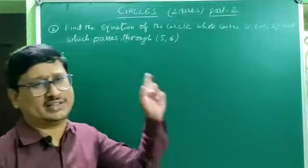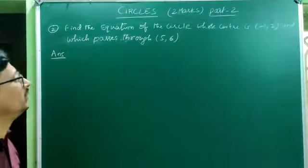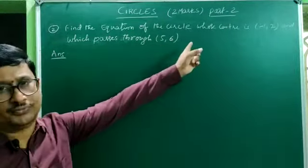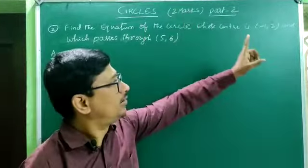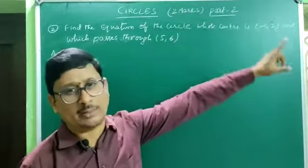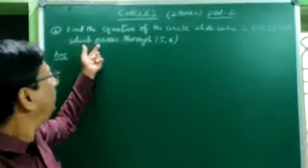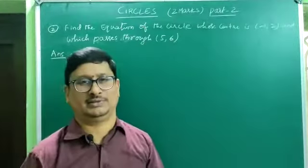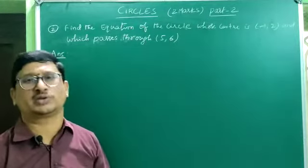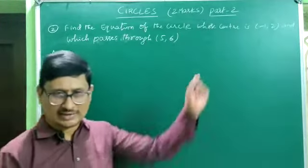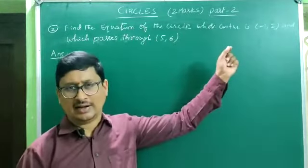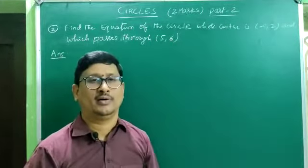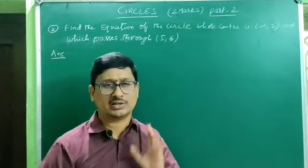Let's see the next problem: find the equation of the circle whose center is (−1, 2) and which passes through the point (5, 6). We have to find the equation of the circle given the center and a point on the circle.